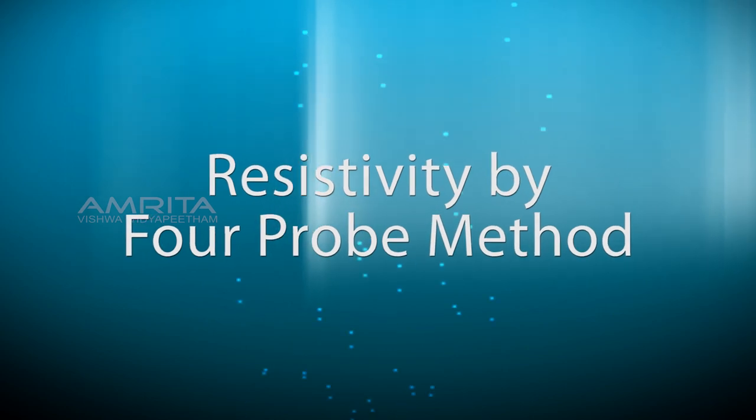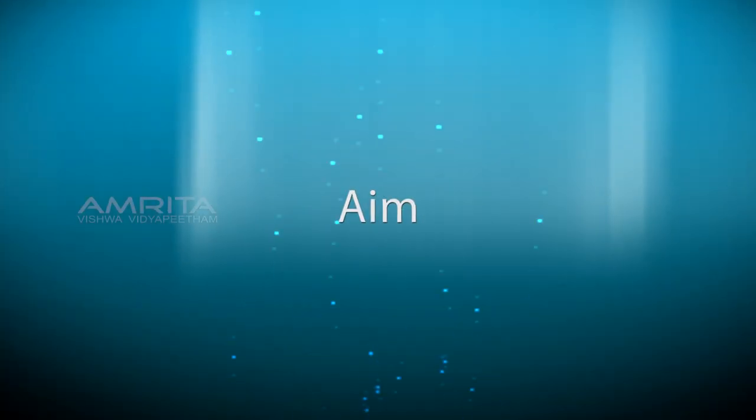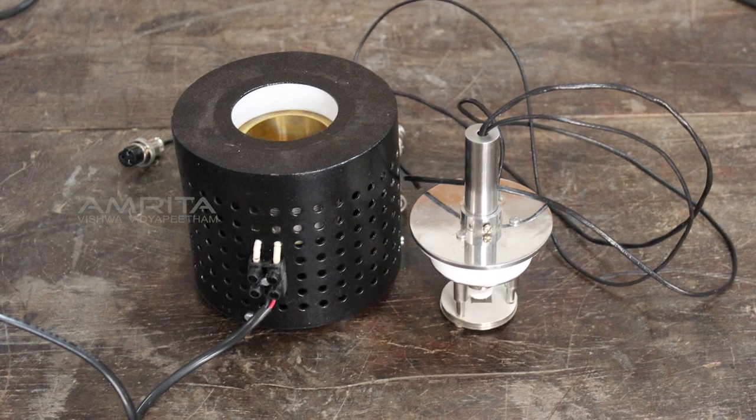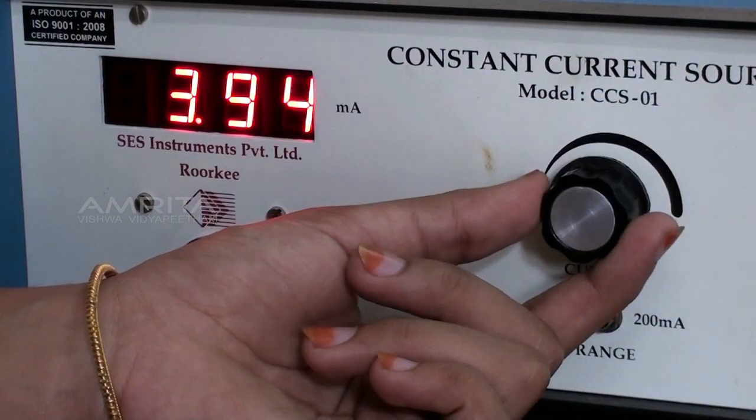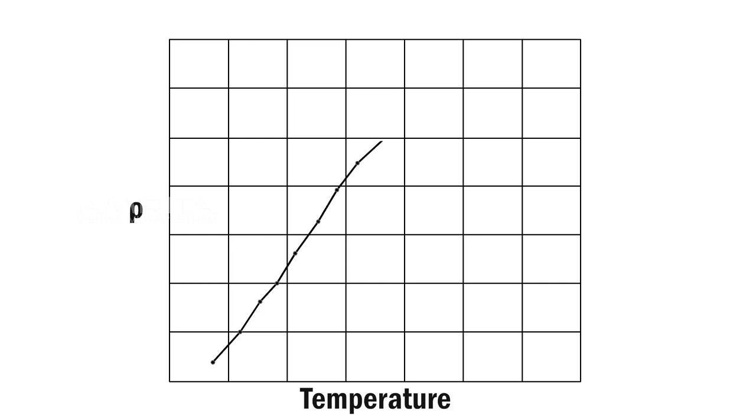Resistivity by 4-probe method. To determine the resistivity of a semiconducting material at different temperatures. To plot the variation of resistivity with temperature.